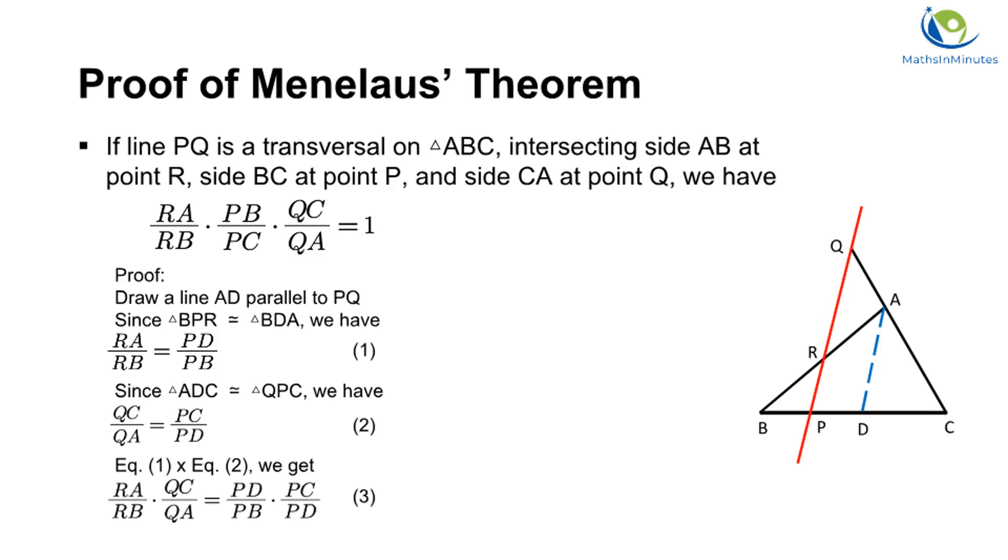After multiplying equation 1 with equation 2, we get equation 3. Eliminating PD in equation 3 and multiplying PB over PC on both sides, we get equation 4, which proves Menelaus Theorem.